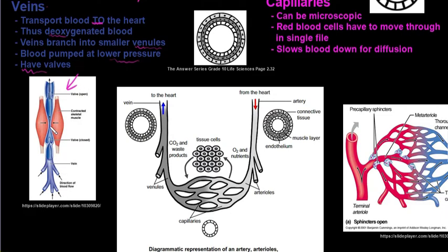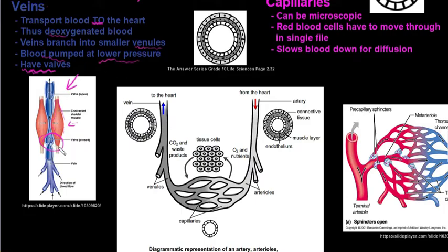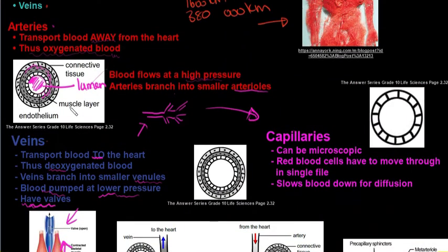Because veins pump blood at a lower pressure, they have valves. Veins also sit in between skeletal muscles, and when you walk or move, those muscles contract and squeeze the vein, forcing blood upwards toward the heart. The valves ensure the blood doesn't flow back — it only moves one way. Comparing vein and artery structure, they are similar with three layers, but the key differences are that the muscle layer in veins is much smaller, and the lumen is much bigger.